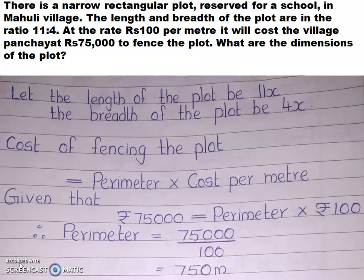Students, in today's session we have to discuss one more question, question number 6 of exercise 2.4. Read the question carefully. This is an application of linear equations. There is a narrow rectangular plot reserved for a school in Mahuli village. The length and breadth of the plot are in the ratio 11 is to 4. At the rate of rupees 100 per meter, it will cost the village panjayat rupees 75,000 to fence the plot. What are the dimensions of the plot?